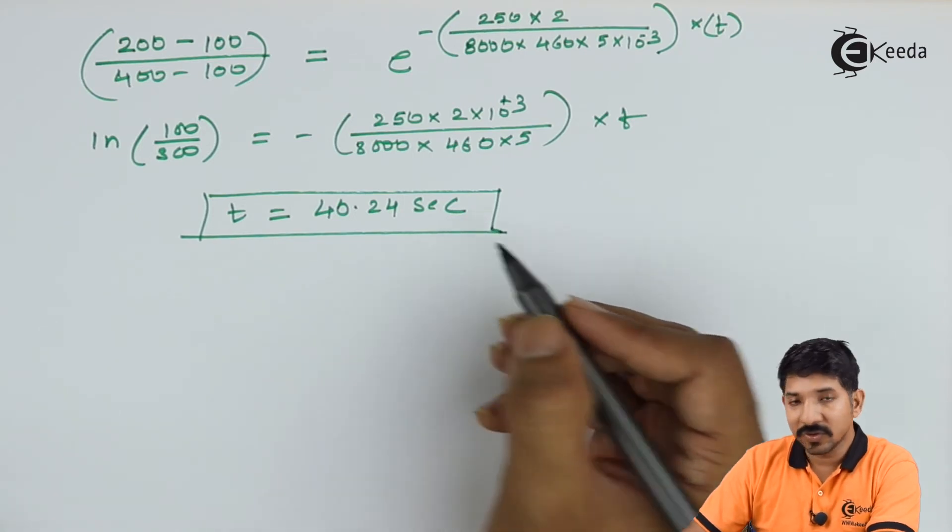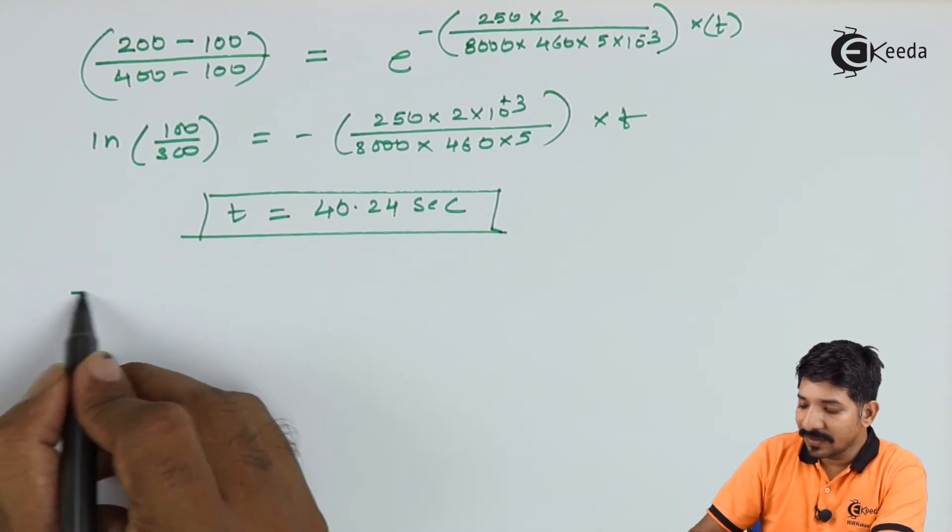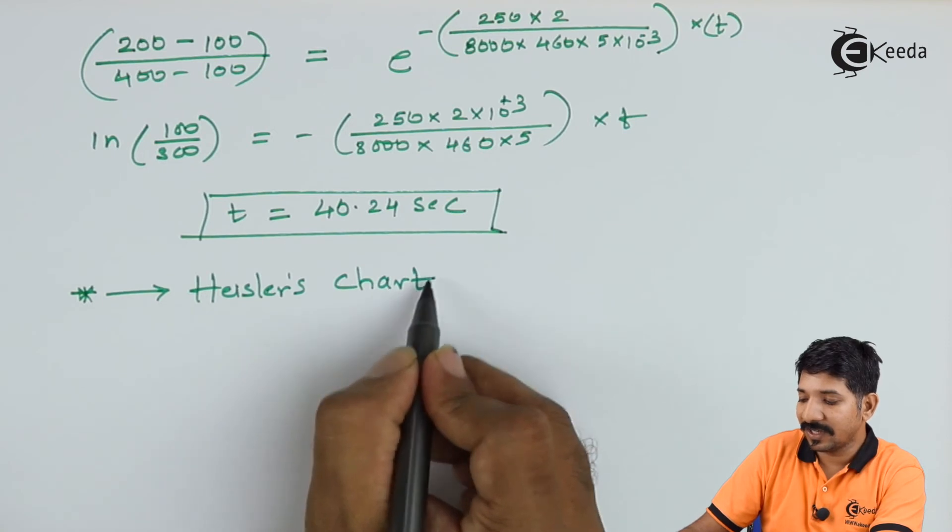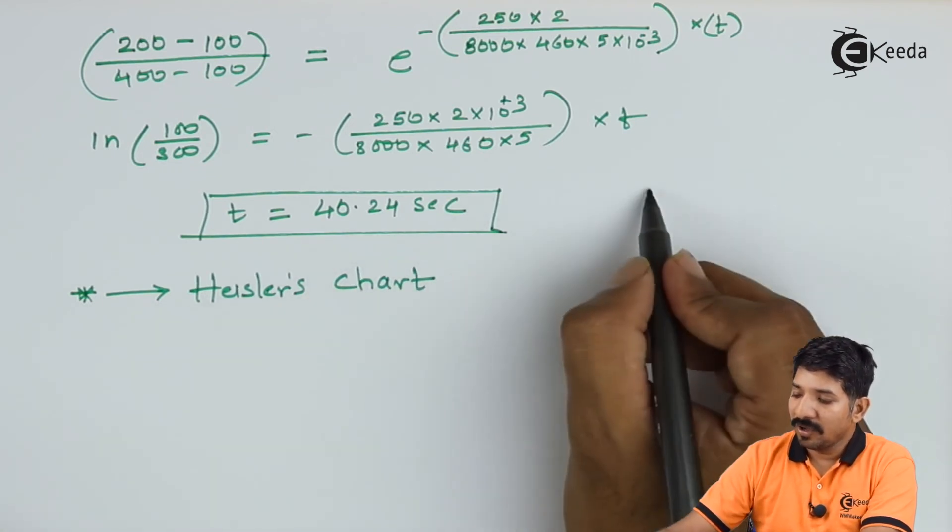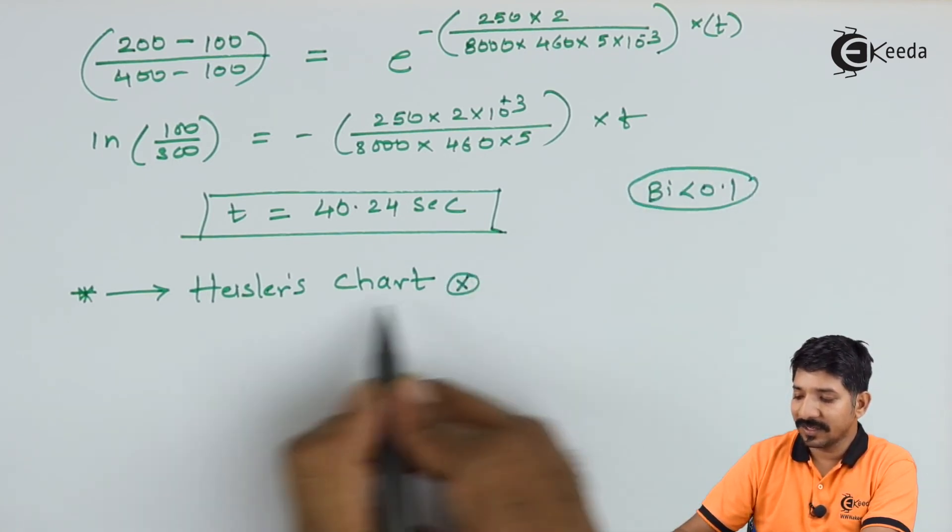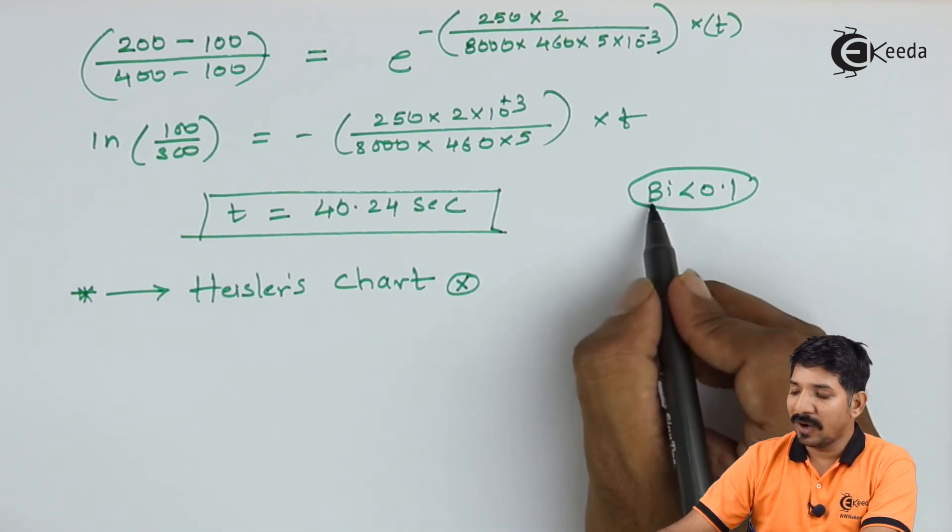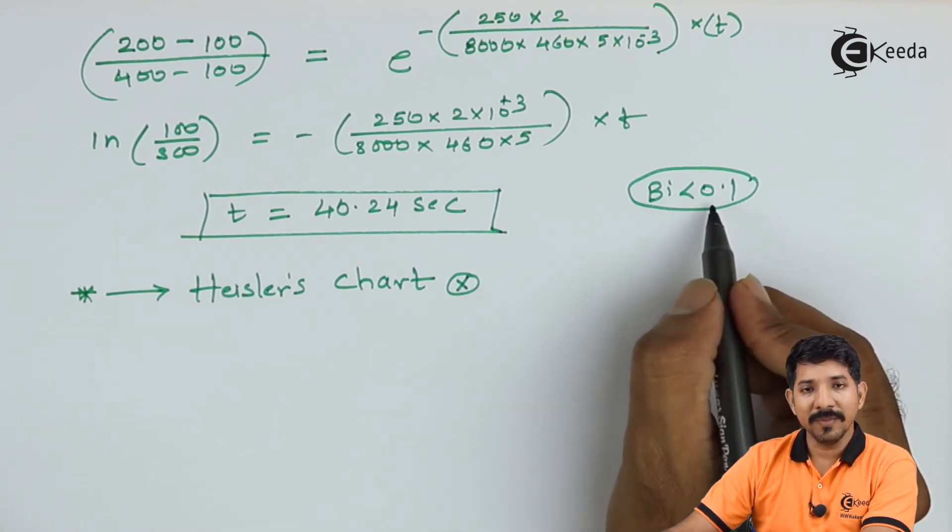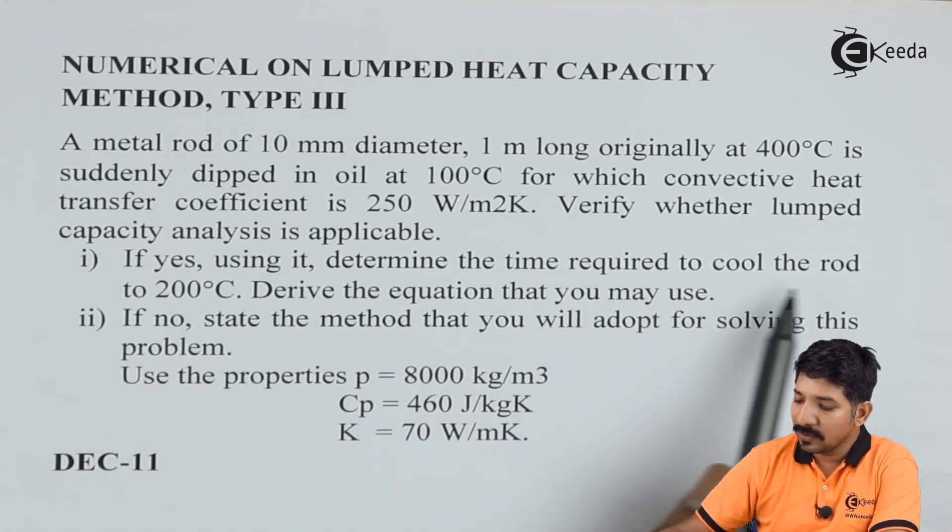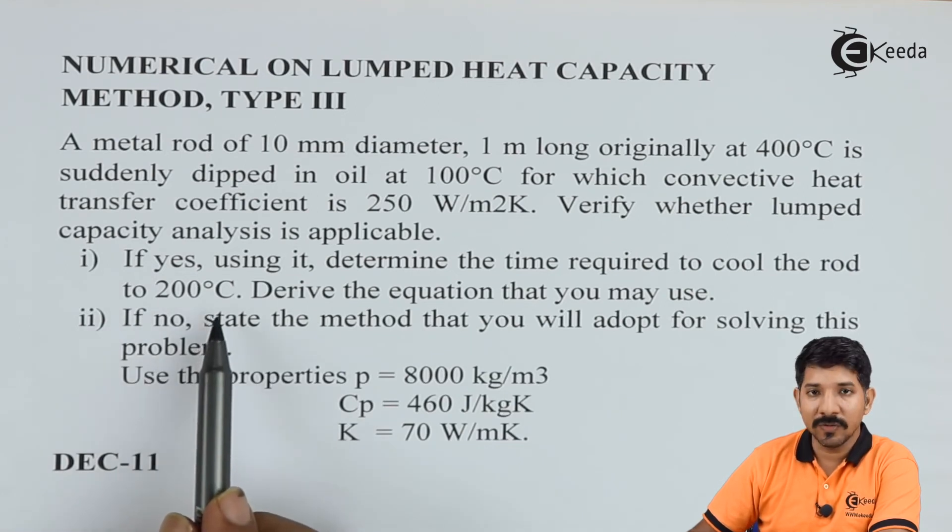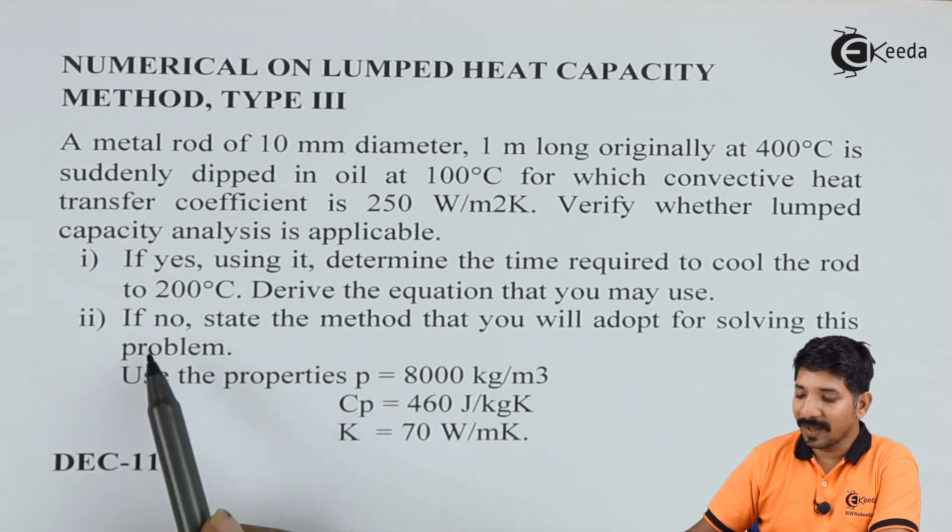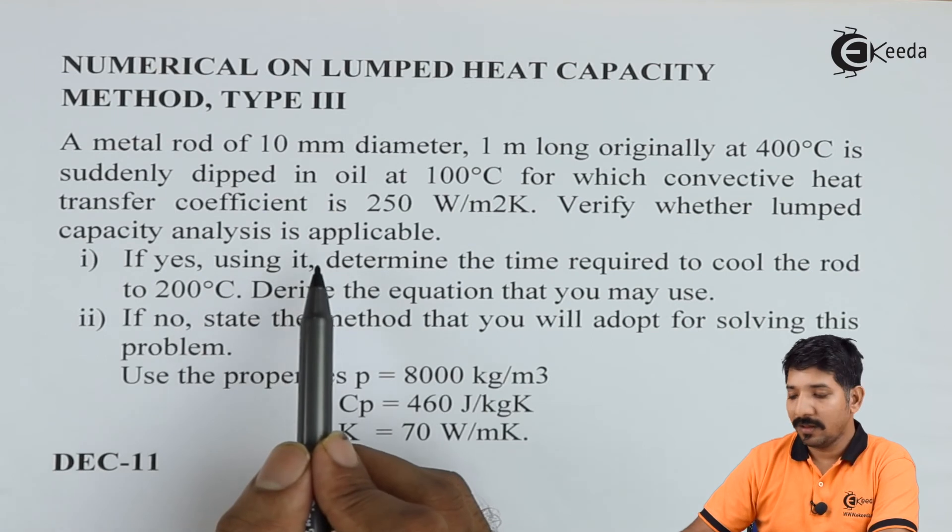If it was not applicable, then what we should have done? Then we should have went for the Heisler's chart. But since the Biot number was less than 0.1, we need not have to go for the Heisler's chart. The Heisler's chart will only come into picture if the Biot number of a given problem is more than 0.1. As you can see in this problem, they had asked us to find out the time required to cool the rod to 200 degree Celsius, which we have found at around 40 seconds. The second case is not applicable because the lumped heat capacity was verified.